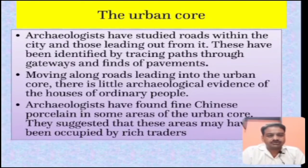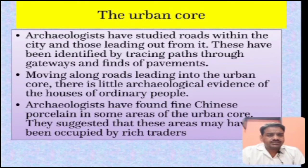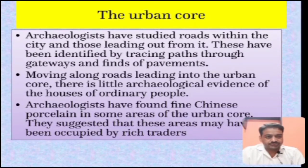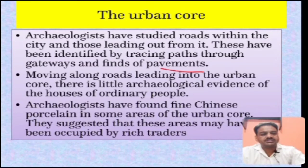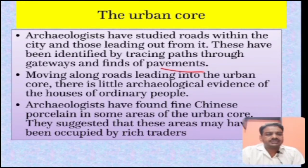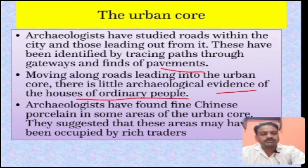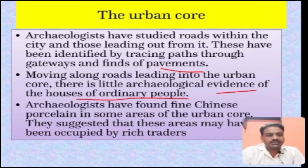Now we will discuss the urban core - what kind of structures used to be there in the main centre of the city. Archaeologists have studied roads within the city and those leading out from it, identified by tracing paths through gateways and finds of pavements. Moving along the roads leading to the urban core, there is little archaeological evidence of the houses of ordinary people. The reason could be that these houses were made up of biodegradable material like wood, so there are no traces of them remaining.